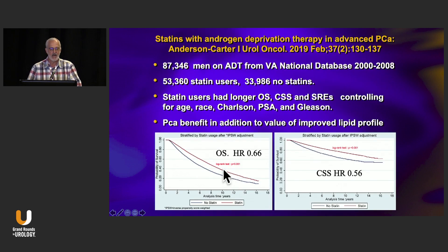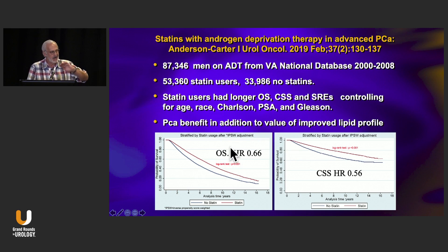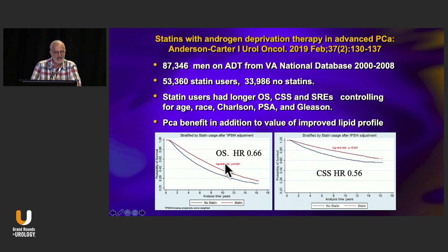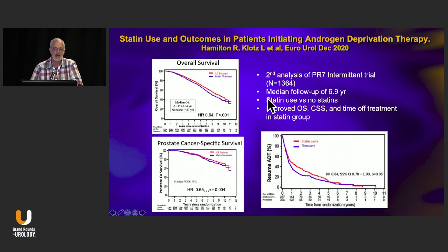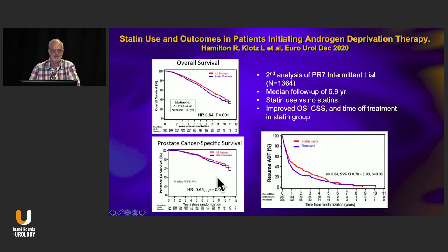This has been demonstrated in preclinical models, and there are now three studies showing the same thing: statins improve prostate cancer outcomes — beyond their cardiovascular and lipid benefits. One fairly recent population study of 87,000 men showed that two-thirds on statins had a benefit in overall survival and cause-specific survival with a hazard ratio of 0.56. We also published a secondary analysis of the PR7 intermittent versus continuous trial showing hazard ratios of 0.65 and 0.84, both statistically significant. Why don't we put all these patients on statins?